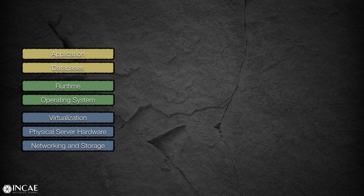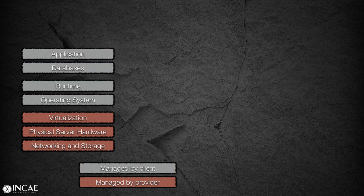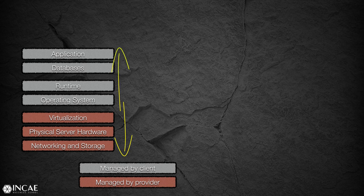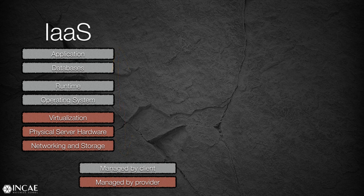Having clarified this, we can now describe the different cloud service models. Imagine a context where we have a given application using the entire IT stack, but the client does not want to take care of the underlying hardware. So everything from virtualization downwards — including the physical server and the networking and storage — is going to be managed by the provider. We only want to care about everything from the operating system upwards. Given that what the provider is doing for us is taking care of the infrastructure, this is what we call an infrastructure as a service offering.